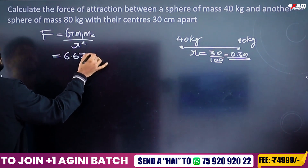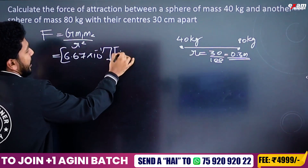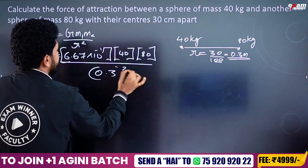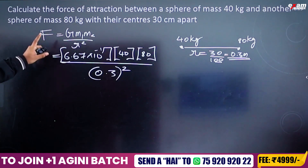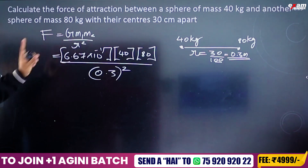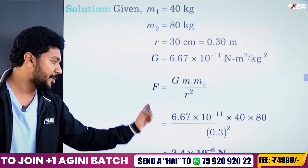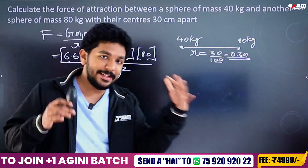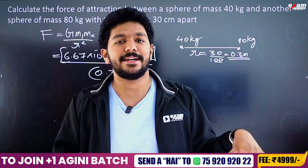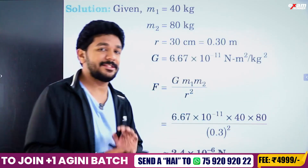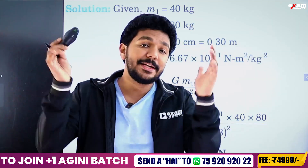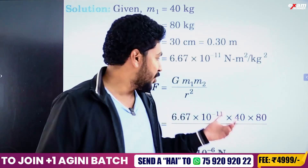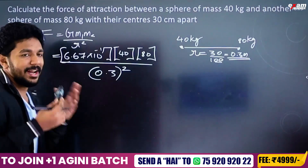The value of G is 6.67 × 10⁻¹¹. Substituting M1 = 40 kg and M2 = 80 kg, divided by the distance squared, 0.3 squared. The answer comes out to 2.4 × 10⁻⁶ N. This is a very small force, which shows that gravitational force is a weak force, even between masses as large as 40 kg and 80 kg.